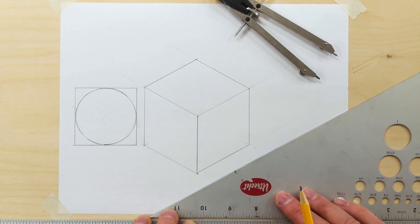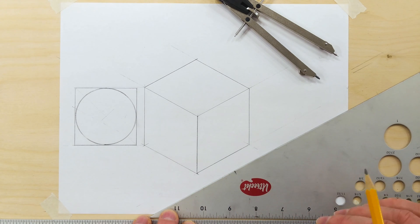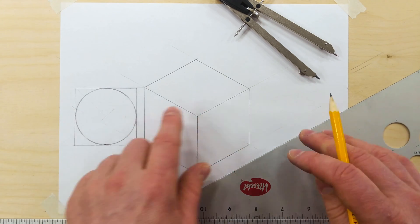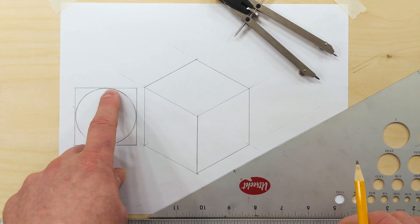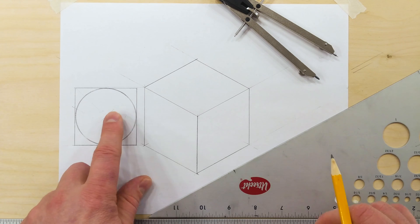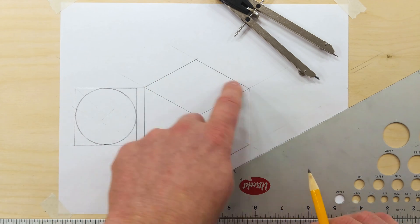Here I have an isometric cube. If you want to know how to draw an isometric cube like this with a t-square, please see the previous video. Over on the left, I have a circle that's drawn with a compass. As you can see, the circle touches the square on all sides. But how do we draw a circle like this with a compass on this square on the top of our isometric cube?